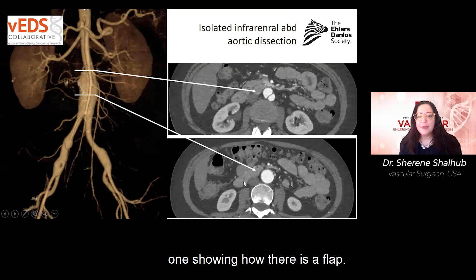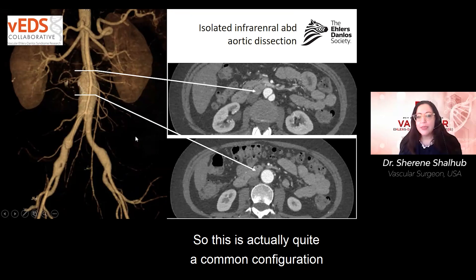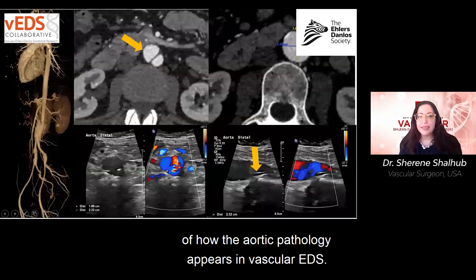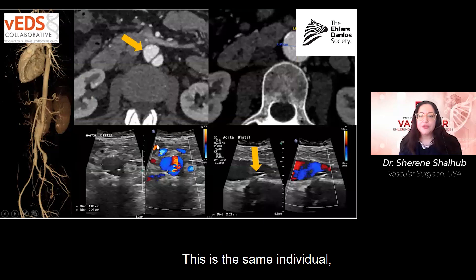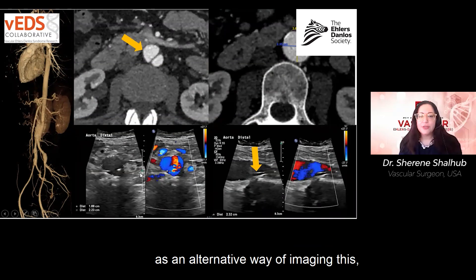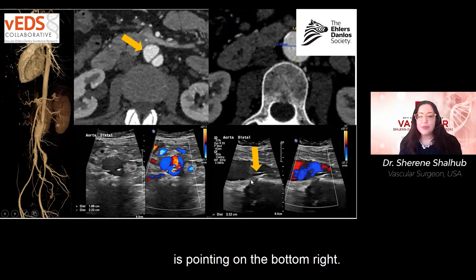You can see cross-sectional images — one showing a dissection flap, another showing an area without one. This is a very common configuration of how aortic pathology appears in vascular EDS. This is the same individual, and we can also see this with ultrasound as an alternative imaging method, with the flap visible where the yellow arrow is pointing.